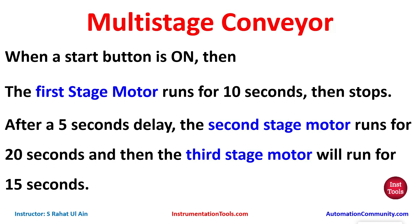We can also interpret this problem statement another way: when the start button is on, the first stage motor runs for 10 seconds and then stops. After start button is turned on there is a delay of 5 seconds for the second stage motor, which will run for 20 seconds, and then the third stage motor will run for 15 seconds. We will start with the first interpretation in this video and then discuss the second interpretation, which involves some change in the cascading of timers.